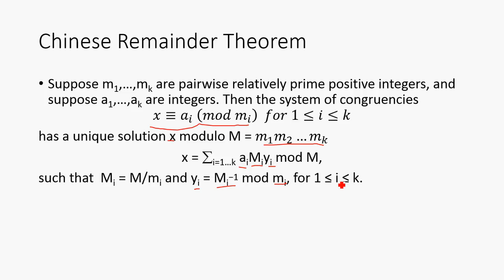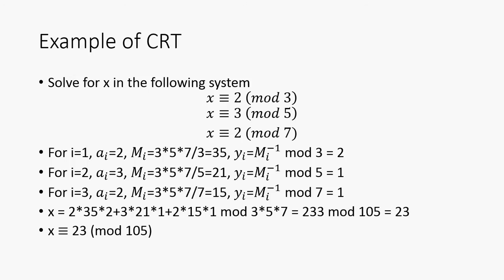Now that probably didn't make much sense at all, so here's an example. We've got this system of congruences here: x is equivalent to 2 mod 3, 3 mod 5, and 2 mod 7.